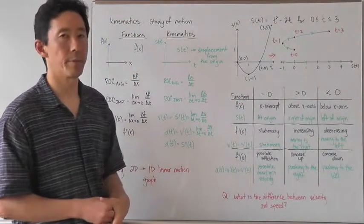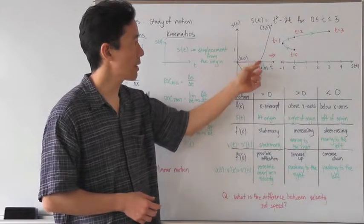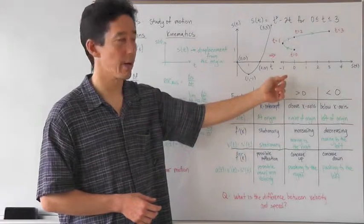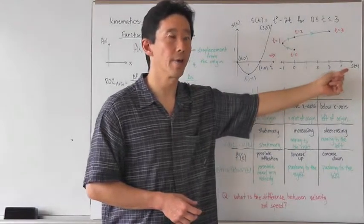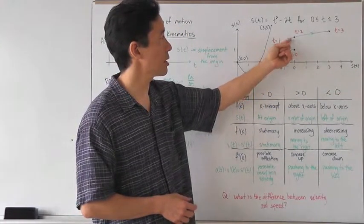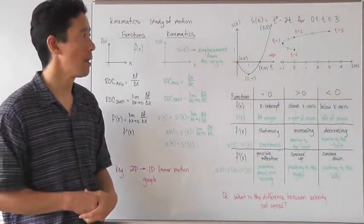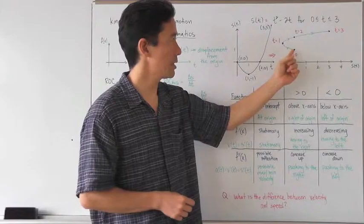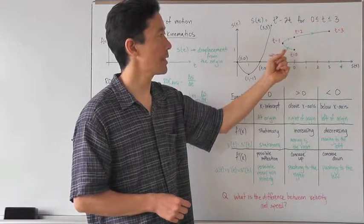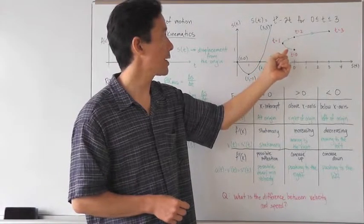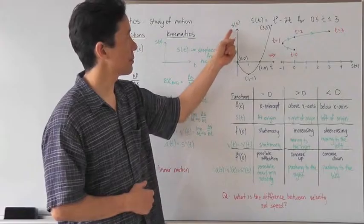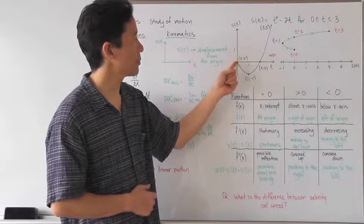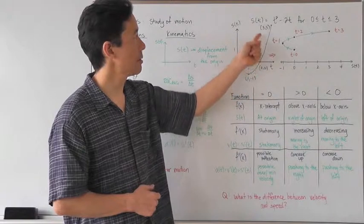Let's take a look at some fundamental differences between the graphs. Of course, the horizontal axis is t and the vertical axis is s of t. When you talk about the one-dimensional graph, the horizontal axis is actually going to be s of t, and the value of t is going to be associated with the points that are actually plotted in the graph. When we talked about a linear motion graph, the particle is just moving left and right. Let's see how the particle is moving as time increases. When we plot the two-dimensional displacement function, the points are: (0, 0), (1, -1), (2, 0), and (3, 3).